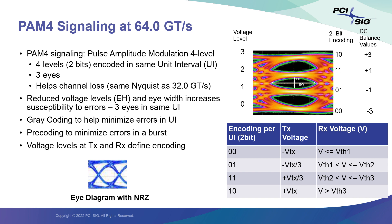Moving from NRZ to PAM4 has its obvious advantages; however, it generates some challenges. With four-level encoding, there are three eyes generated in the same interval. The reduced eye height and eye width increase the bit error rate and degrade the signal-to-noise ratio. FEC, or forward error correction, has been introduced in other technologies to bring the BER to an acceptable level.